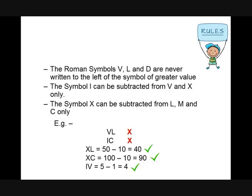The symbols V, L, and D are never written to the left of a symbol of greater value. The symbol I can be subtracted from V and X only. The symbol X can be subtracted from L, C, and M only. For example, we cannot combine Roman symbols like this, but we can combine Roman symbols like these.